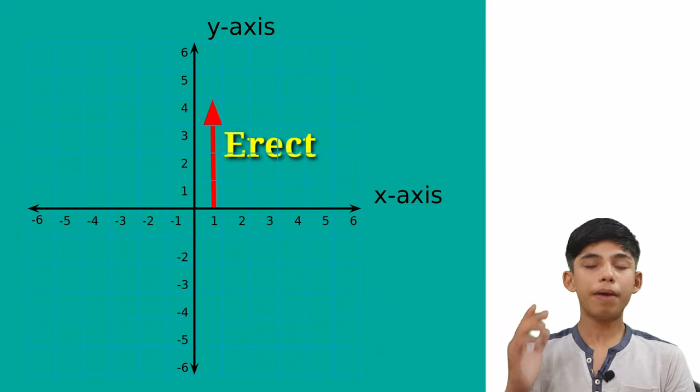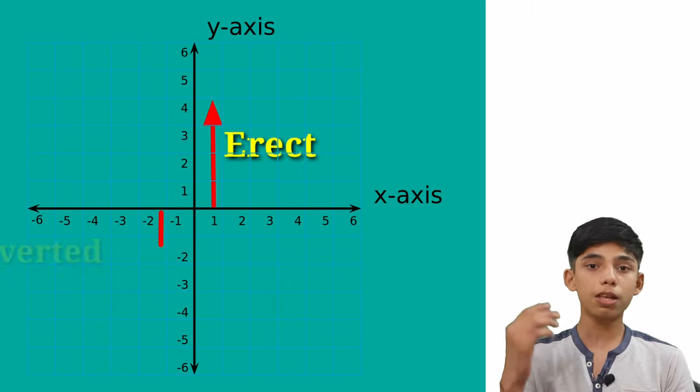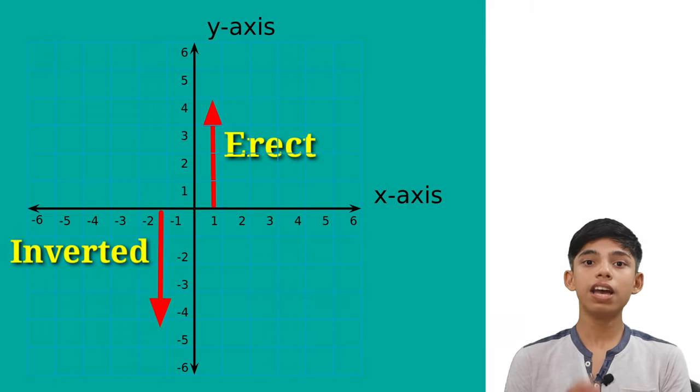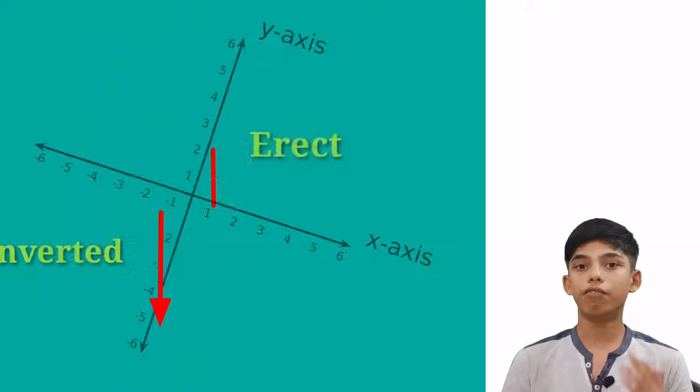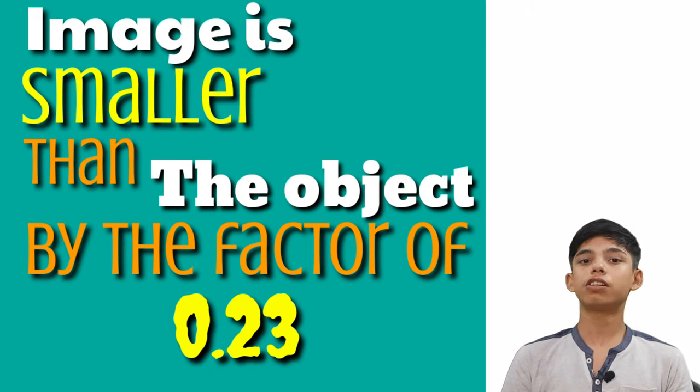So whenever the magnification is positive, the image is erect. And whenever the magnification is negative, our image is going to be inverted. So we have found that our image is smaller than the object by a factor of 0.23. So that's it.